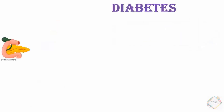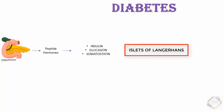The pancreas is responsible for producing the peptide hormones, which include insulin, glucagon, and somatostatin. These hormones are produced by the islets of Langerhans cells of the pancreas and are responsible for glucose homeostasis.